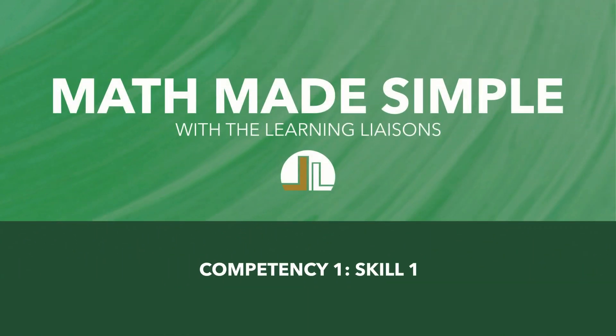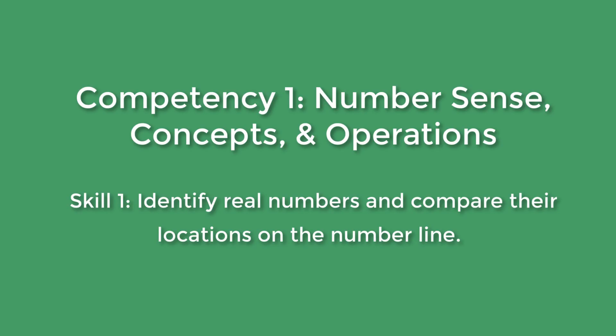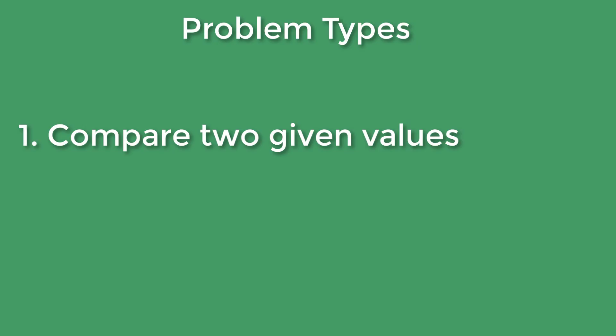Let's go ahead and get started. Competency one: number sense, concepts, and operations. Skill one: identify real numbers and compare their locations on the number line. In this first skill, what you can expect to see are three main types of problems. The first type is identifying what the comparison is between two numbers.